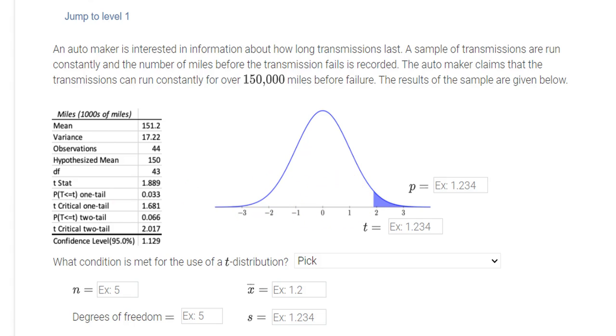So my P value for a one tail test is 0.033. And that's coming straight from the table. P value for a one tail test. My T value, here's my T stat, 1.889.